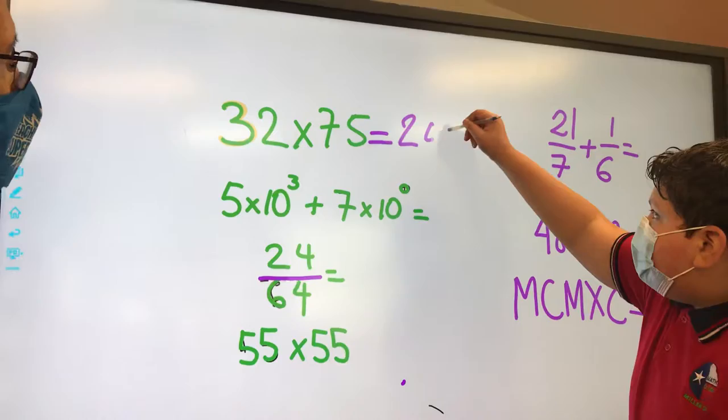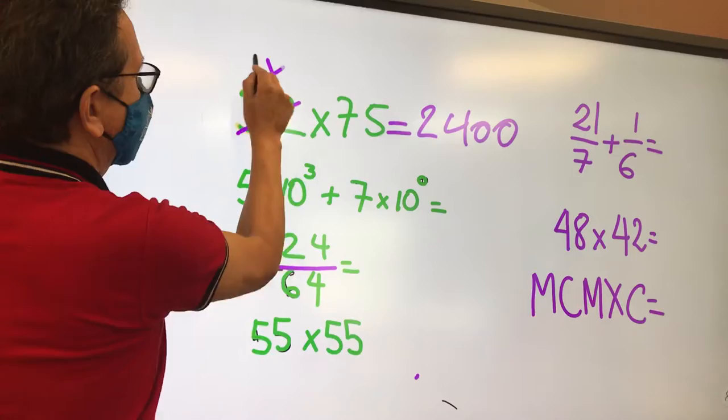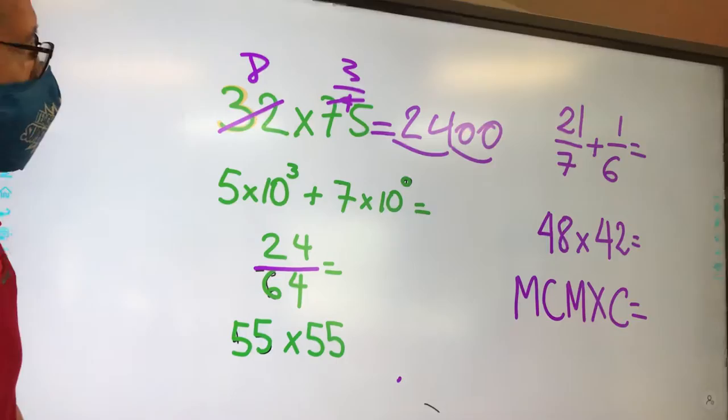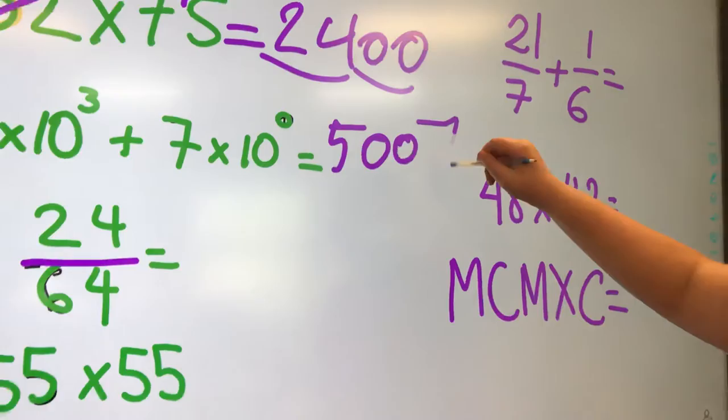2,400. Exactly, because you divide this by 4 is 8, and this is 3 fourths. So eliminate this. 8 times 3 is 24, times 100, 2,400. What's the answer for this?